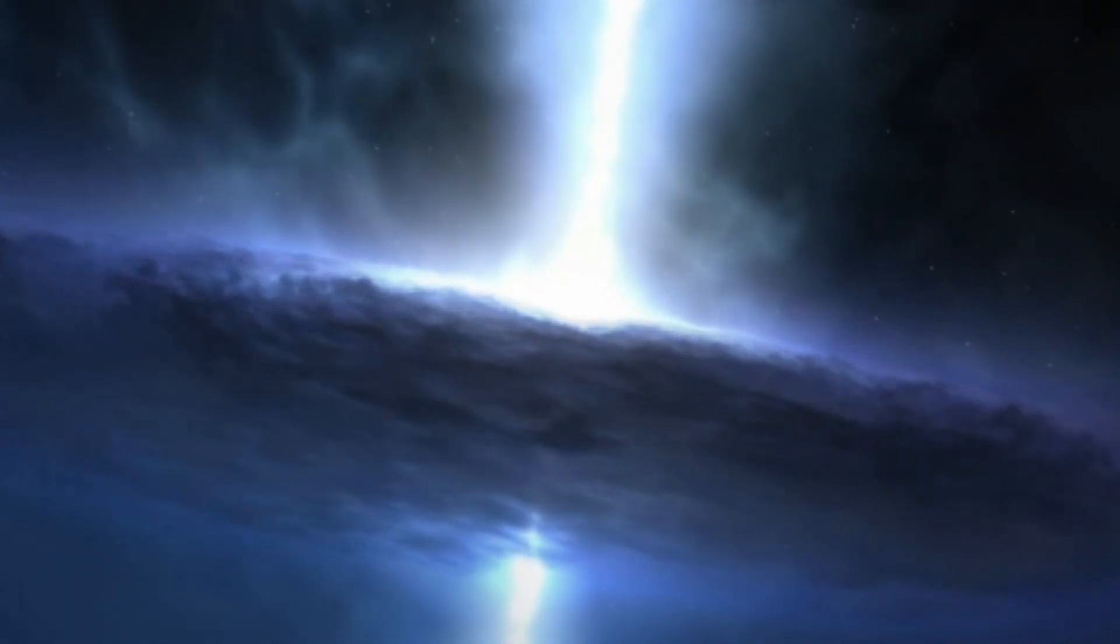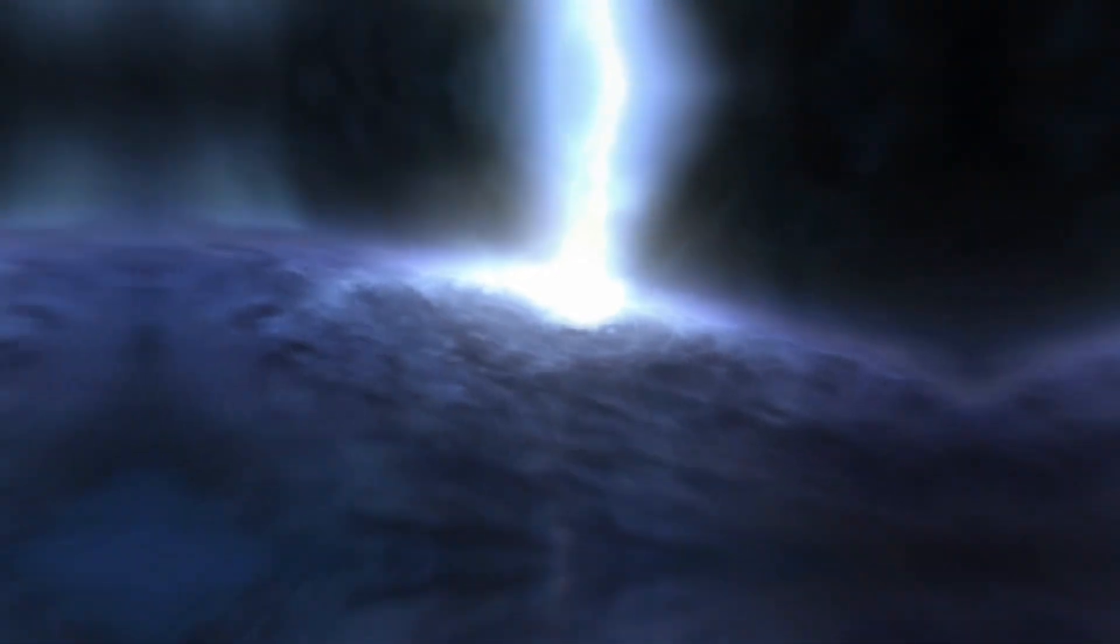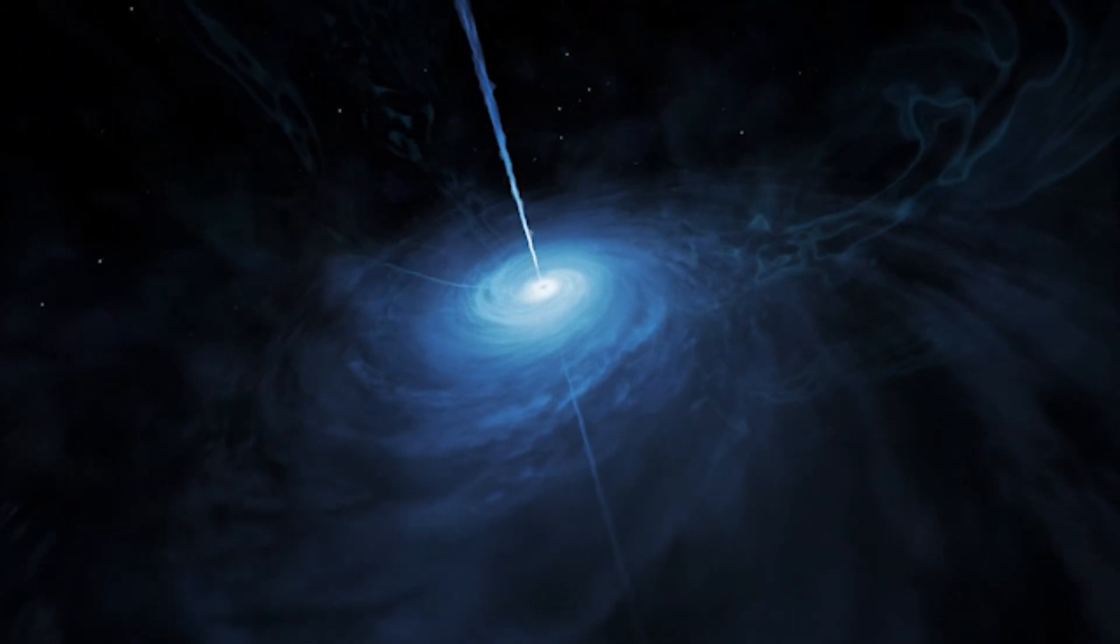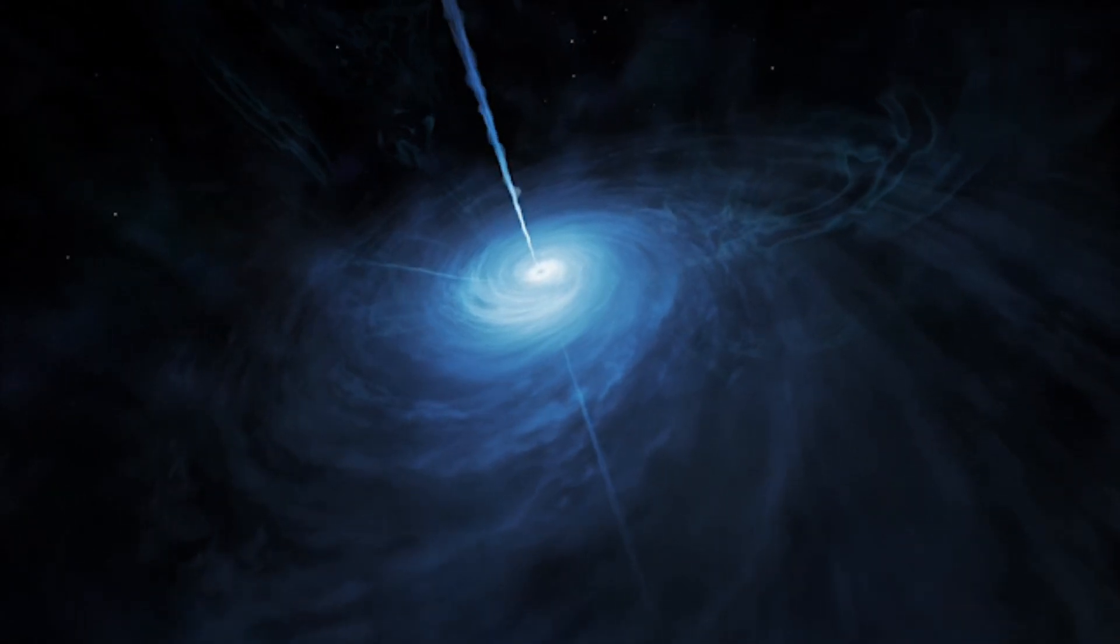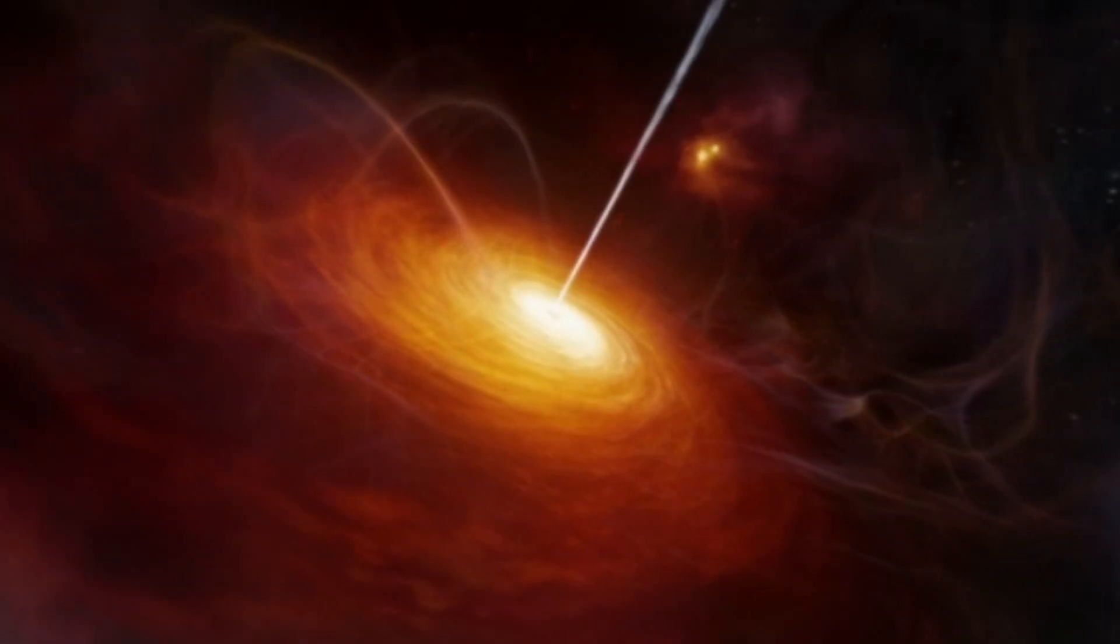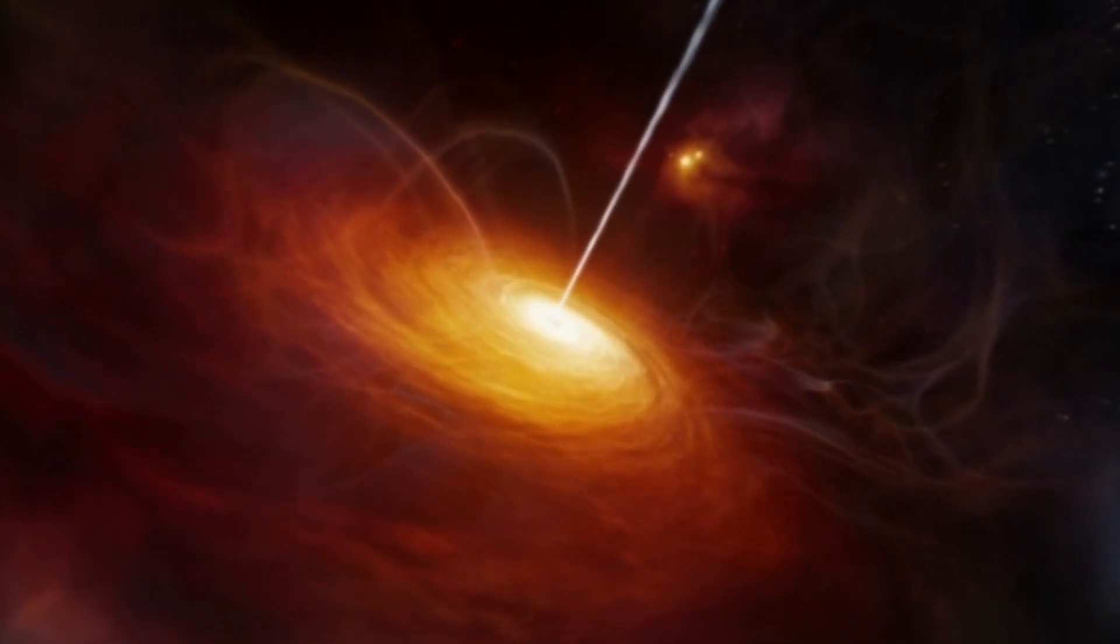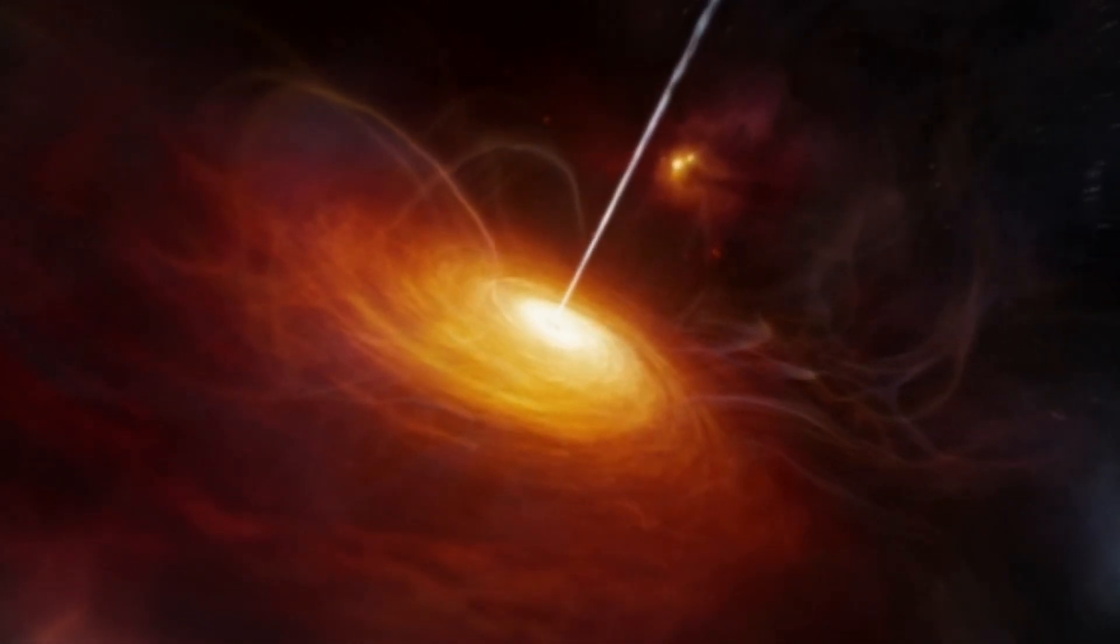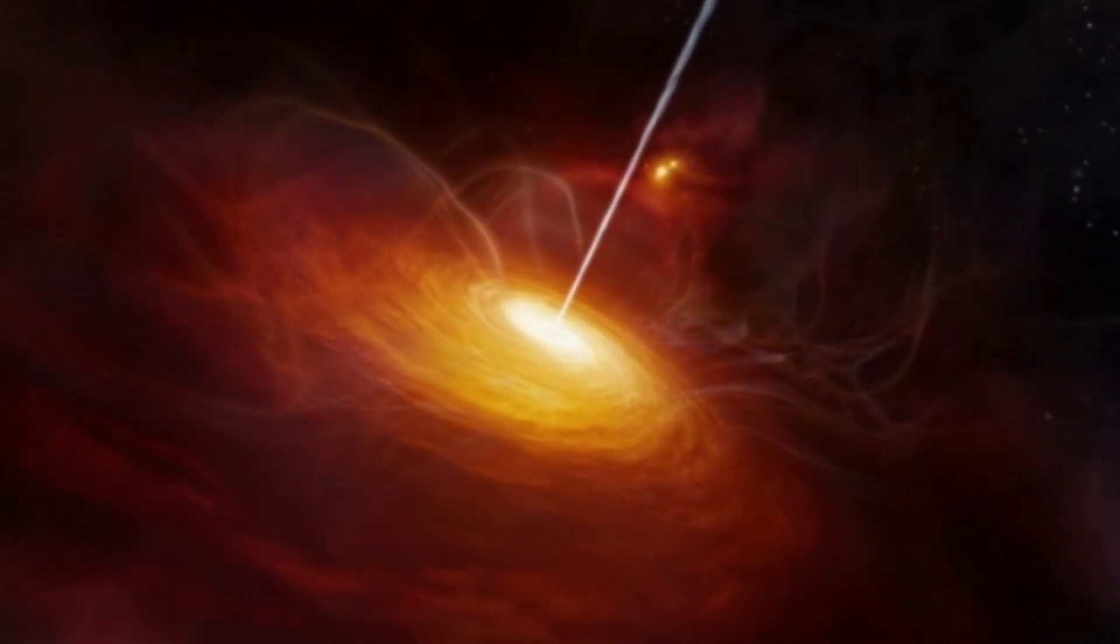Quasars are among the brightest objects in the universe and can outshine entire galaxies. They are found billions of light-years away and provide valuable insights into the early universe and galaxy formation. It is powered by a supermassive black hole at the center of a galaxy. The black hole pulls in surrounding matter, creating an accretion disk that emits intense radiation across various wavelengths.